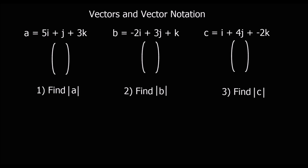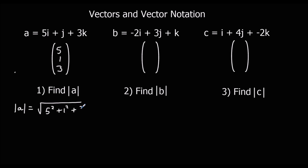Now we're going to look at finding the magnitude of a vector, or the modulus of a vector. So if we've gone 5 along the x, 1 up the y, and 3 out the z direction, how far have we travelled? What's the distance between the point where we started and the point where we've ended up? The way we do this is by using Pythagoras, so the modulus of a is going to be the square root of 5 squared plus 1 squared plus 3 squared.